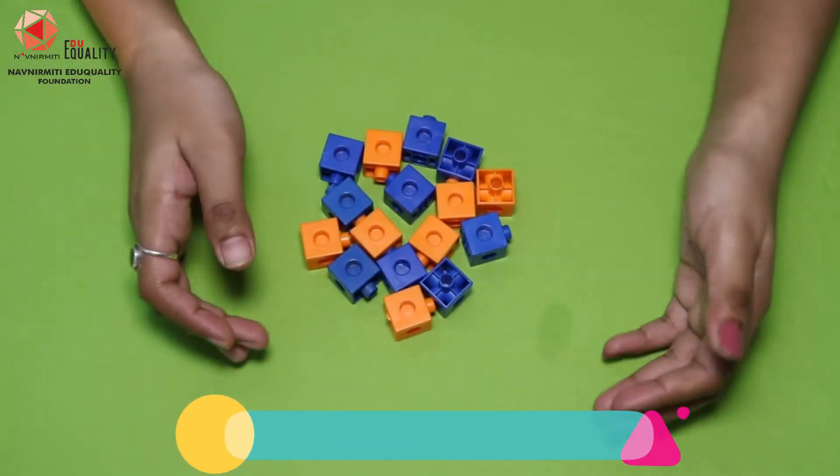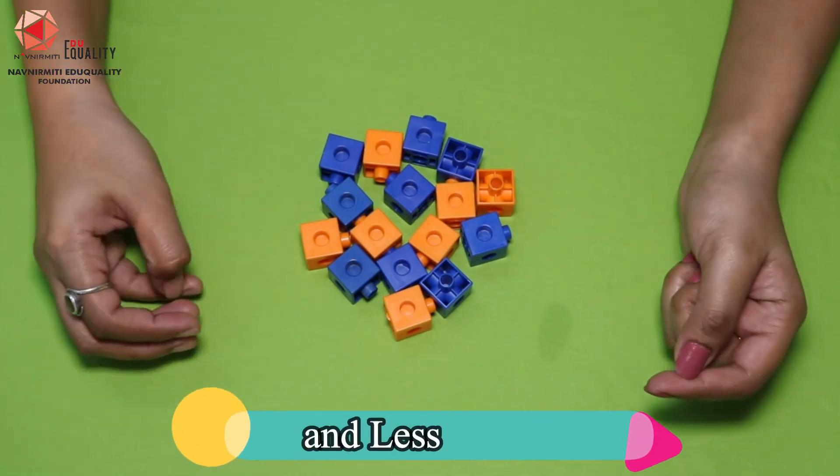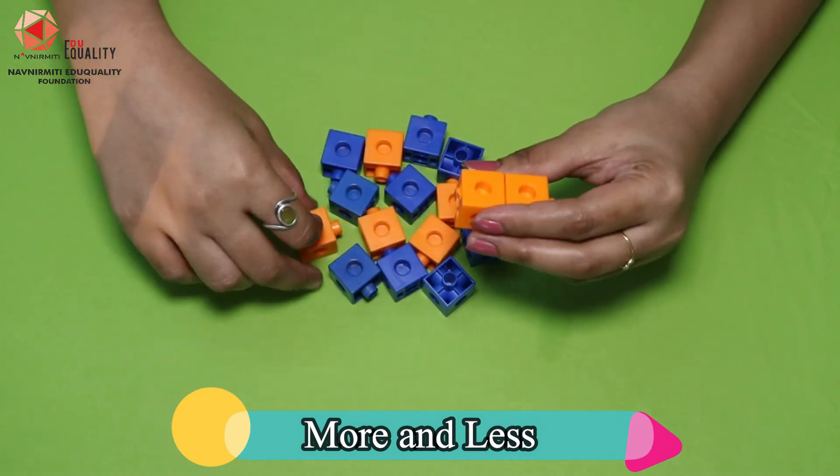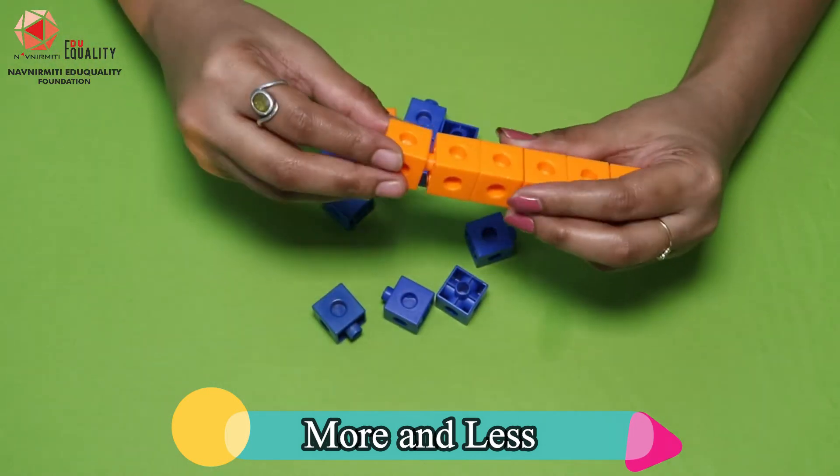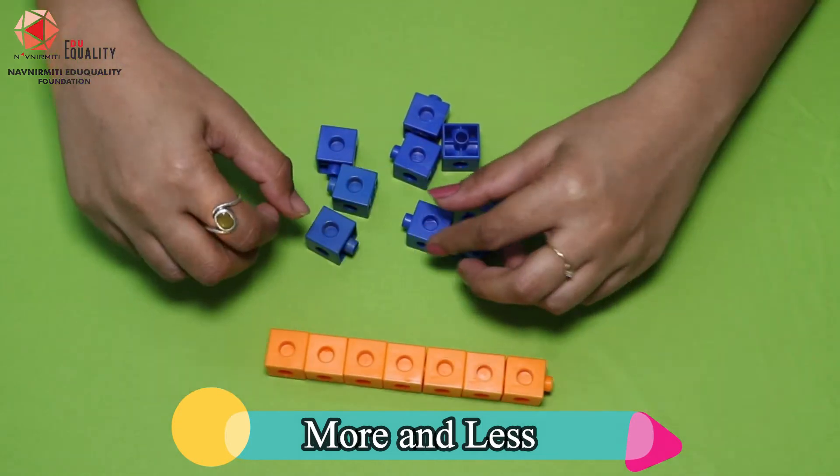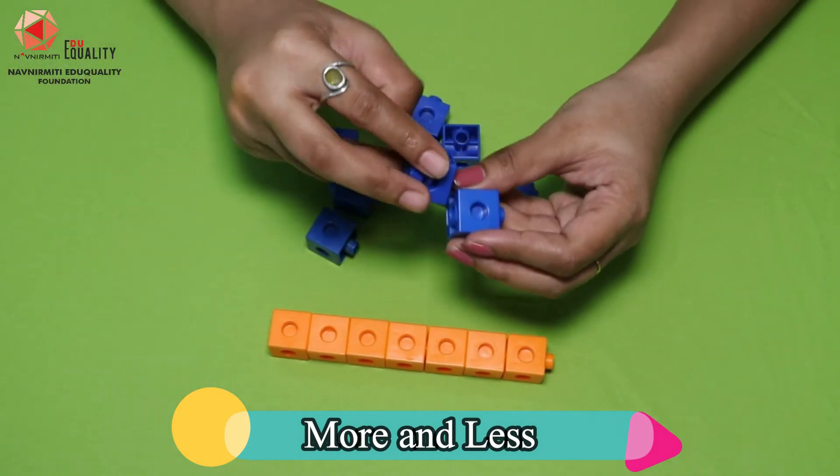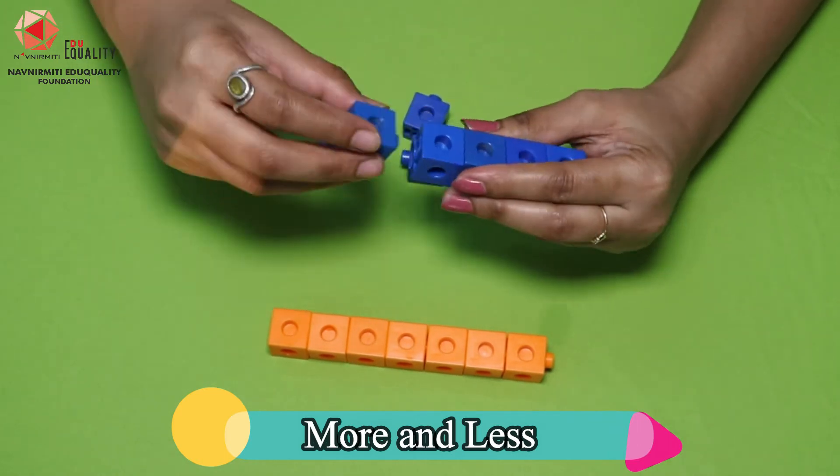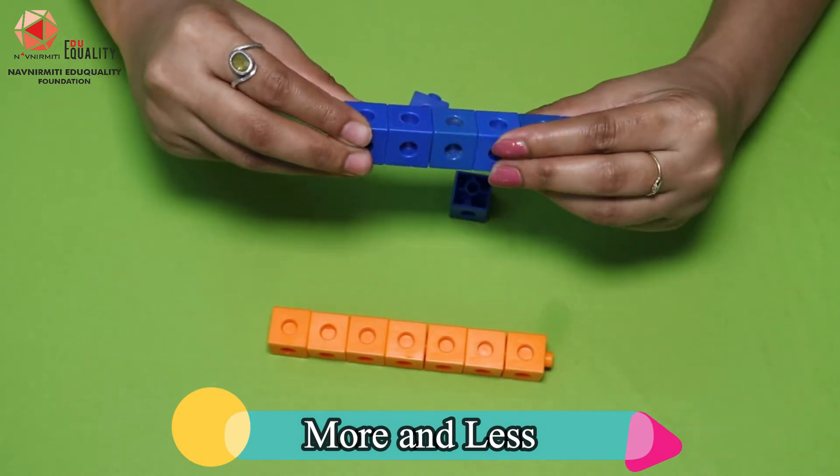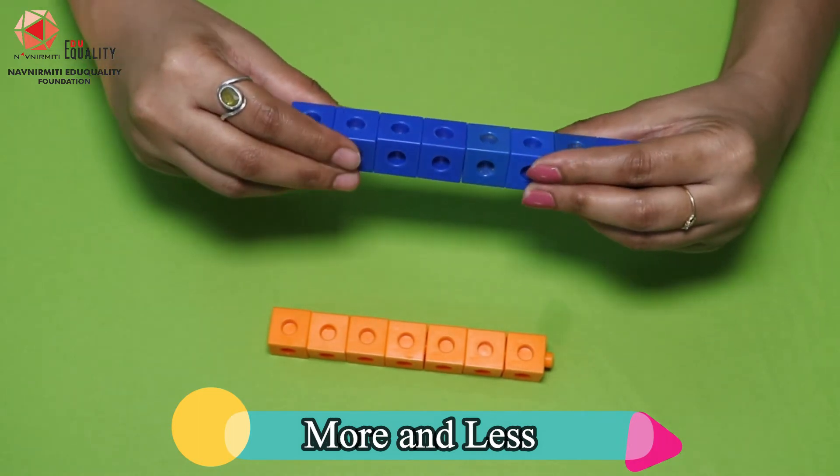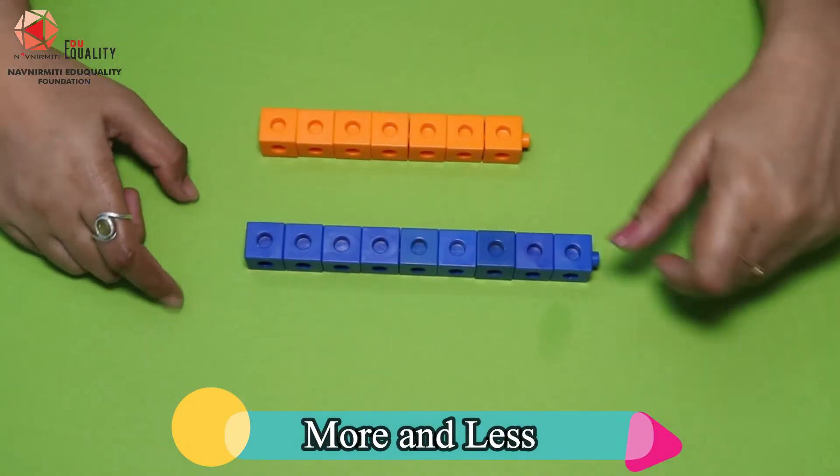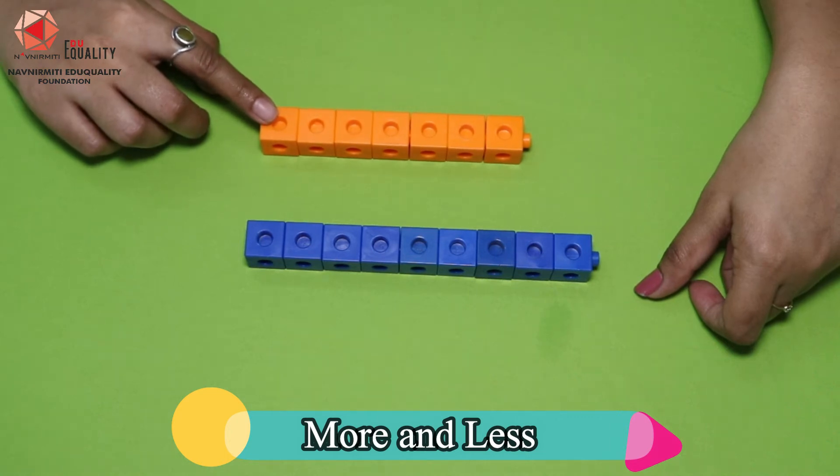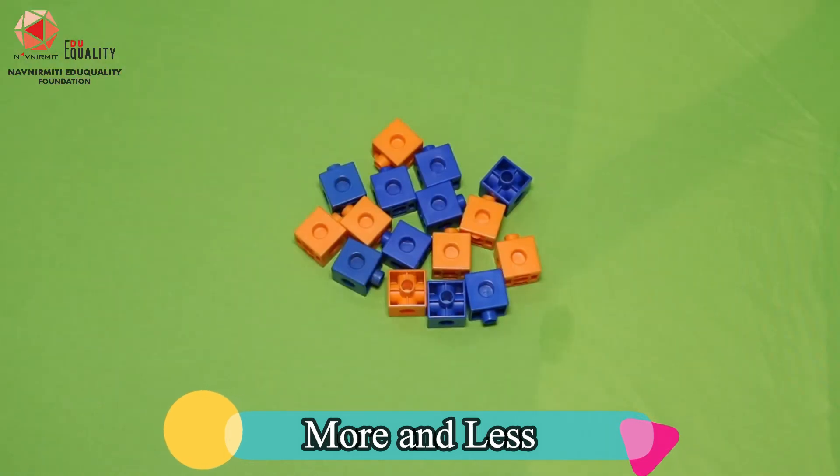Which blocks are more, orange or the blue ones? Let's check for the orange blocks first. Now let's check for the blue blocks. We can see that the blue rod is longer than the orange rod. So blue blocks are more than the orange blocks.